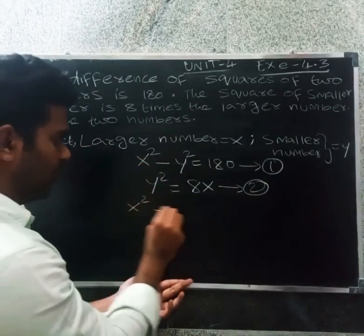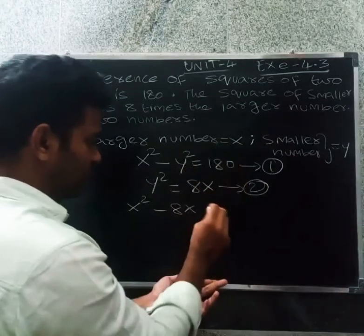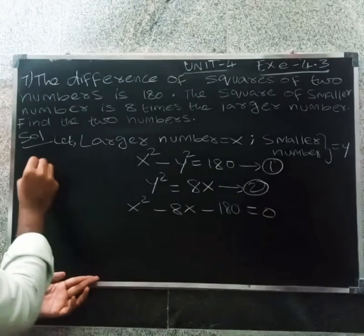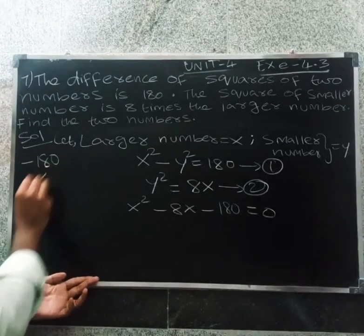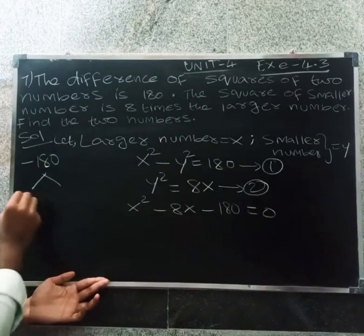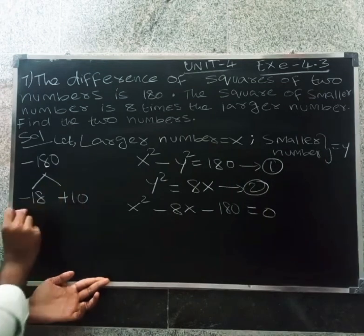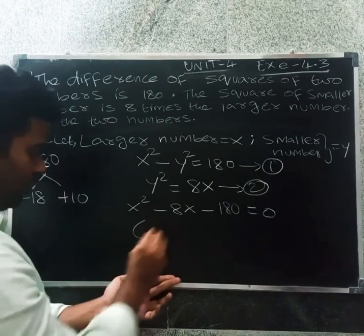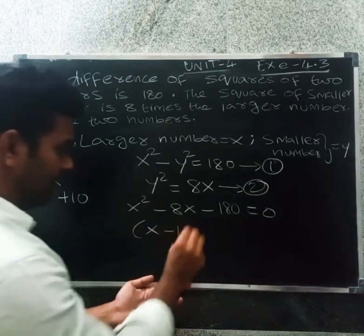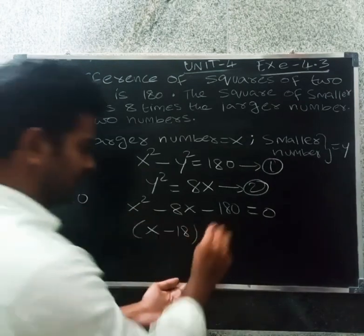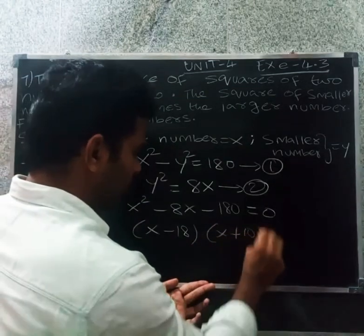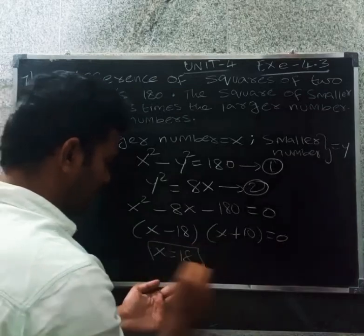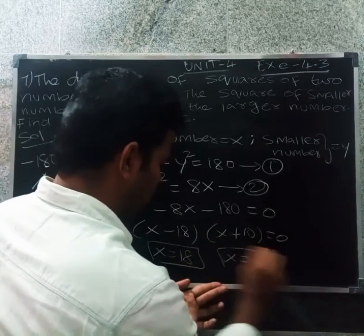Therefore x squared minus 8x minus 180 equals 0. Factoring: multiply to get minus 180, add to get minus 8, giving factors of minus 18 and plus 10. So x equals 18 or x equals minus 10.